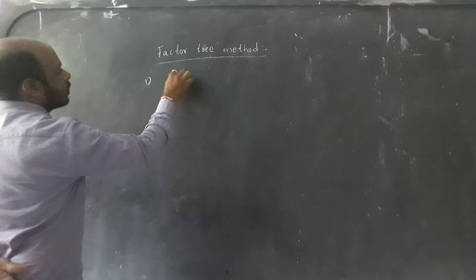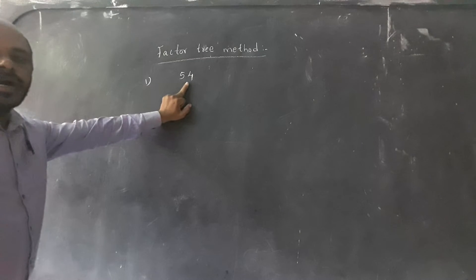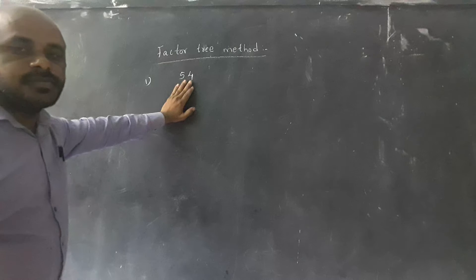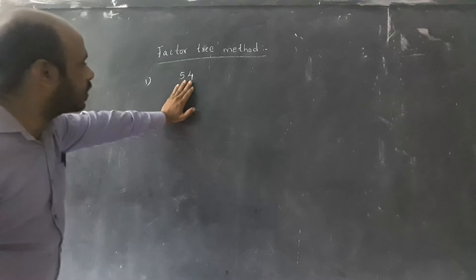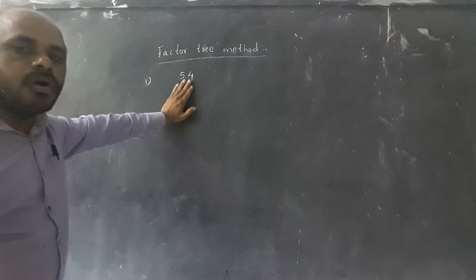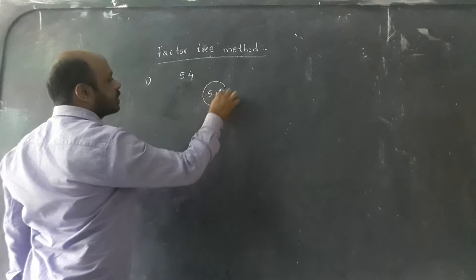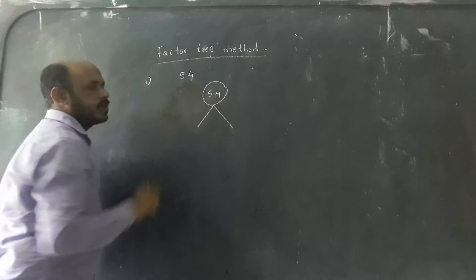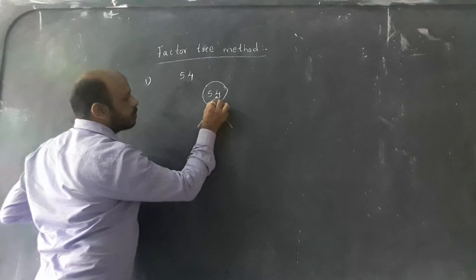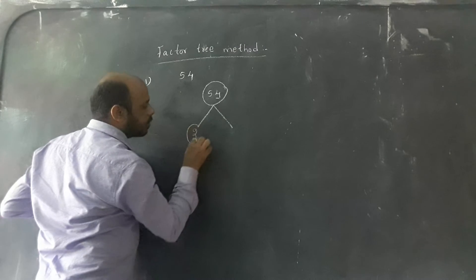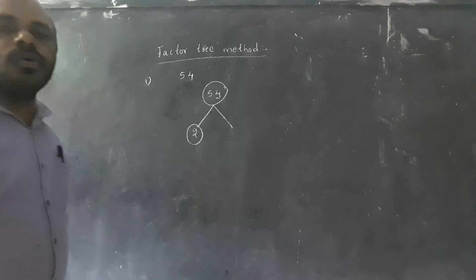Suppose 54 is there. 54 is an even composite number. Composite number means the number should have more than two factors — we will say it is a composite number. This composite number we have to write as the product of all the prime numbers. Here, even number is there, so I am taking the even prime number. Even prime number is 2. 2 is an even number and 2 is having only two factors, that's why 2 is an even prime number.